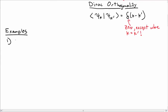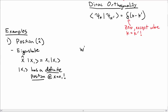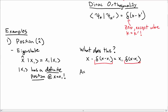Our first example is position, with associated operator x hat. The eigenstates of position satisfy: the position operator on an eigenstate x1 gives back x1 times that state. So state x1 has a definite position, namely x equal to x1. The function that does this is the delta function: x times delta of x minus x1 gives x1 times delta of x minus x1, by the definition of the delta function. So we associate this delta function with our eigenstate x1.